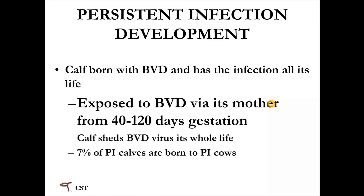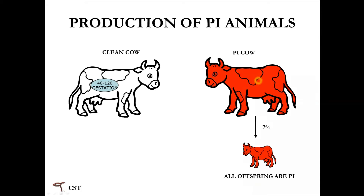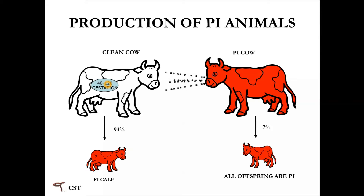The PI calf is born with the virus and has the infection all its life — they are only born PI and do not become PI after birth. This occurs when the mother is exposed to the virus from day 40 to 120 of gestation. Seven percent of persistently infected calves are born to cows that are PI themselves — meaning some PI animals do reach maturity and re-enter herds. More often, a clean cow in the proper stage of gestation gets exposed to the virus and produces a persistently infected calf.